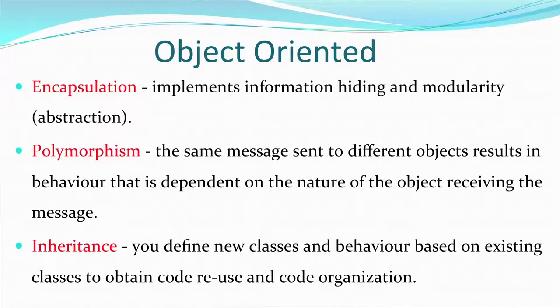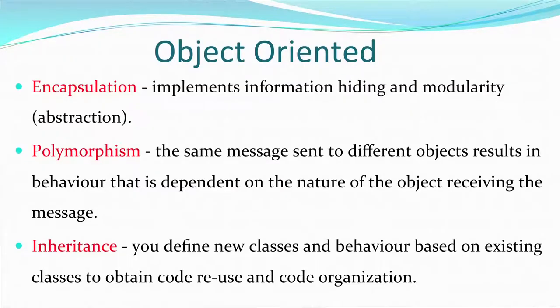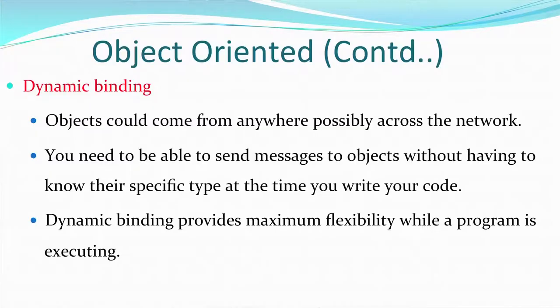Polymorphism means the same message is used again and again according to different requirements and different forms. The same message sent to different objects results in behavior dependent on the nature of the receiving object — so you get a different output depending on the object and the arguments given with the message. Inheritance means a particular class uses the code of the class from which it is inherited. You define new classes and behavior based on existing classes to obtain reusable code.